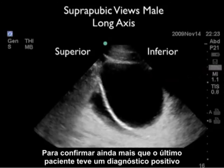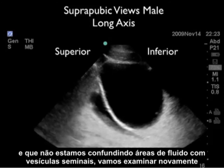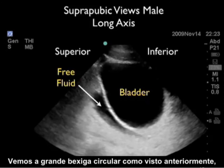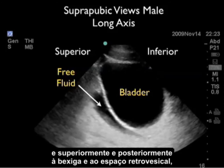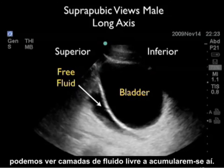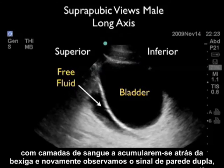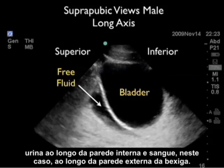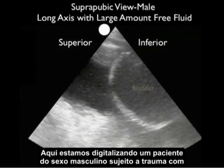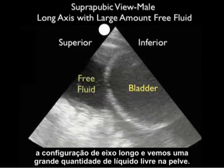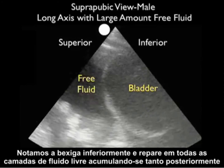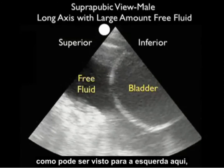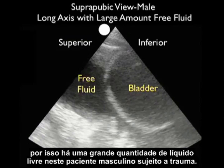To further confirm that the last patient had a positive exam and that we're not mistaking the areas of fluid for seminal vesicles, we'll rescan the patient in the long axis plane, superior to the left, inferior to the right. We see the large circular bladder anteriorly, and superior and posterior to the bladder in the retrovesical space, we can see free fluid layering out. This confirms the patient has a positive exam with blood layering out behind the bladder, and again we see the double wall sign — urine outlining the inner wall and blood outlining the outer wall. Here we're scanning another male trauma patient in long axis, showing a large amount of free fluid within the pelvis, both posterior to the bladder in the retrovesical space and coming anteriorly onto the dome of the bladder.